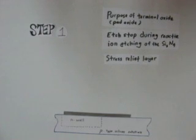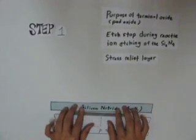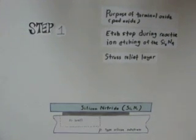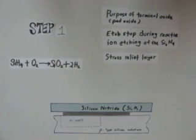Step 1. To begin the process of LOCOS, we will start with the P-type substrate. Before we start to induce a silicon nitride layer on top of the substrate, we will have to first deposit a layer of silicon dioxide. The purpose of this silicon dioxide layer is to act as an etch stop during reactive ion etching of the silicon nitride, and to be a stress inhibitor for the silicon nitride. The purpose of the silicon nitride is to act as a masking layer against oxidation. This is the formula of deposition for silicon dioxide on the P-type substrate.